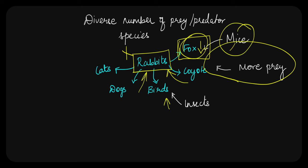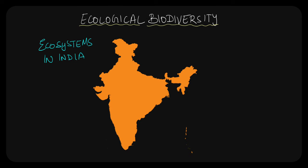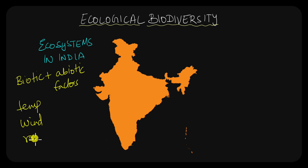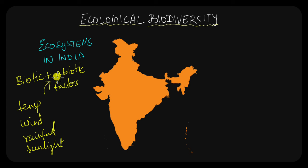With this, let's move on to ecological biodiversity. An ecosystem is made up of both biological or biotic and non-biological or abiotic factors. Abiotic factors could be temperature, wind, rainfall or precipitation, sunlight availability, etc. All those abiotic factors also play a very important role in the formation of an ecosystem.